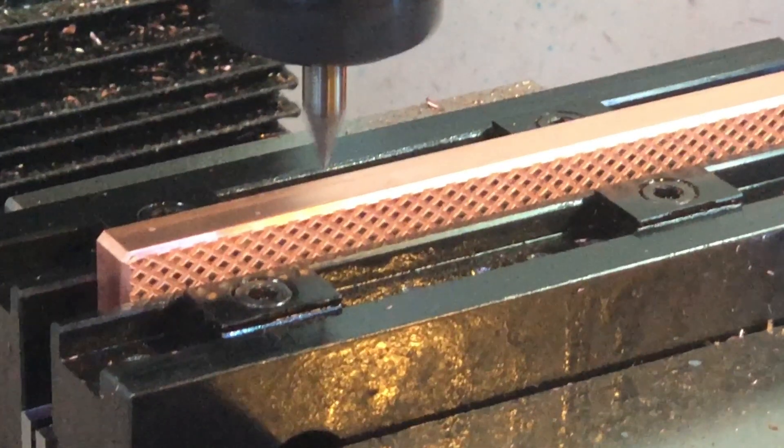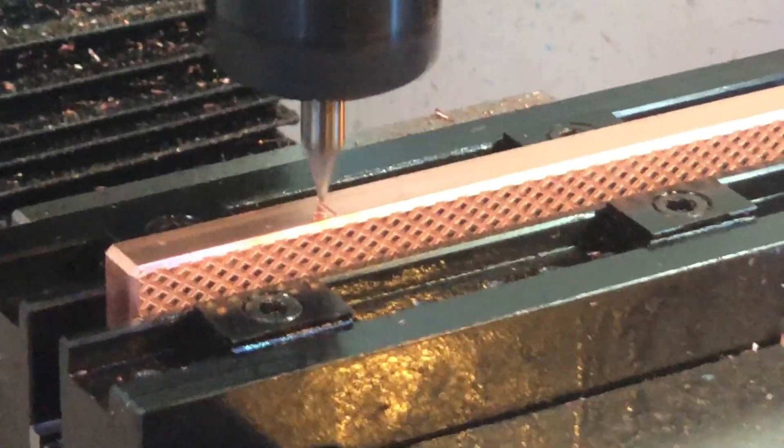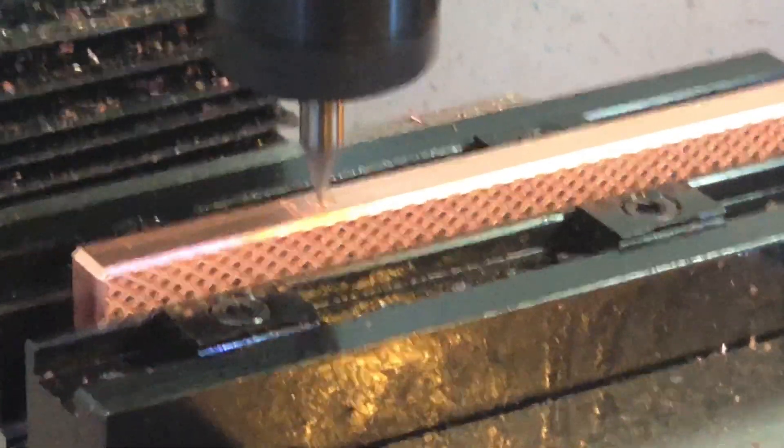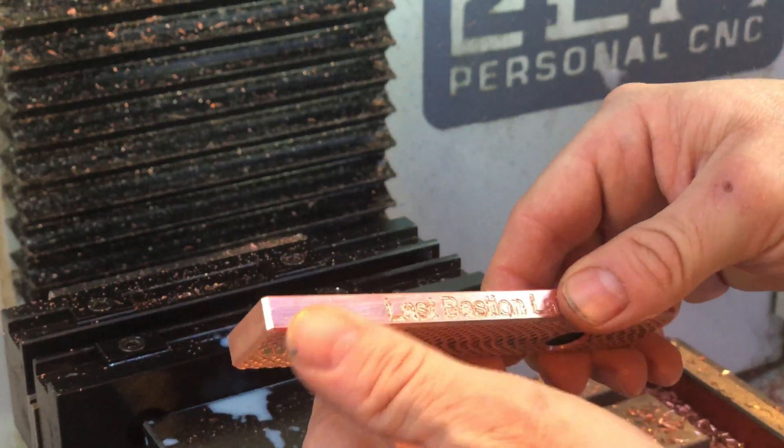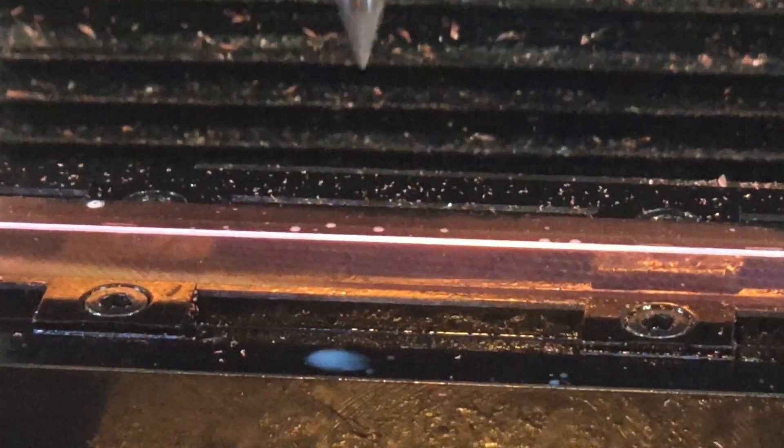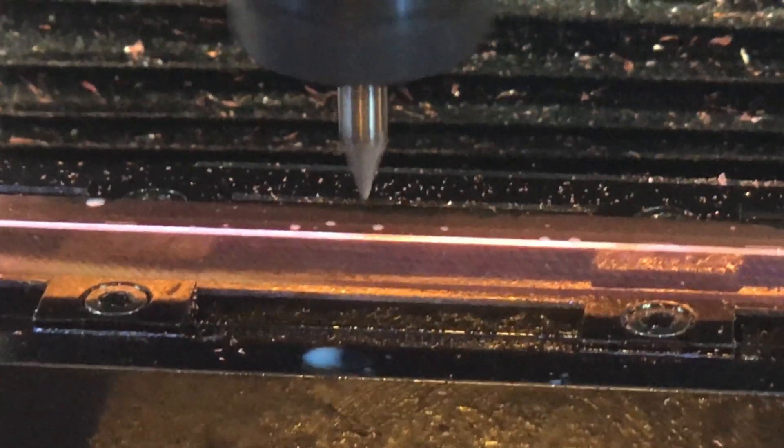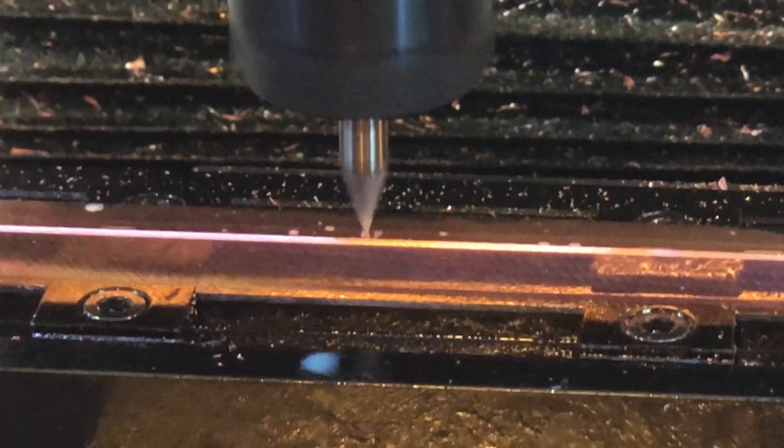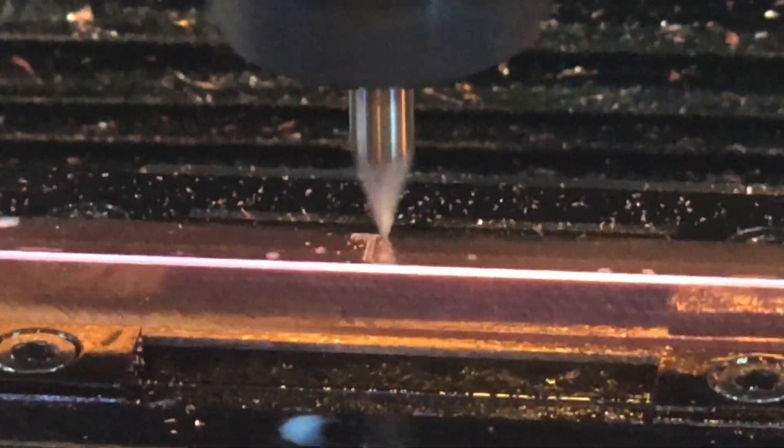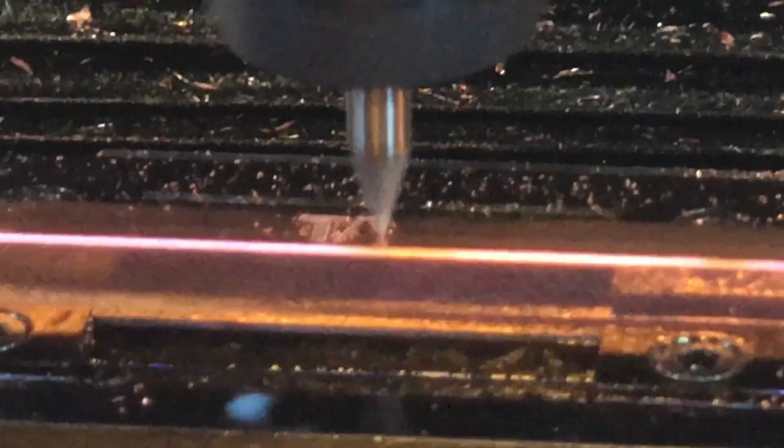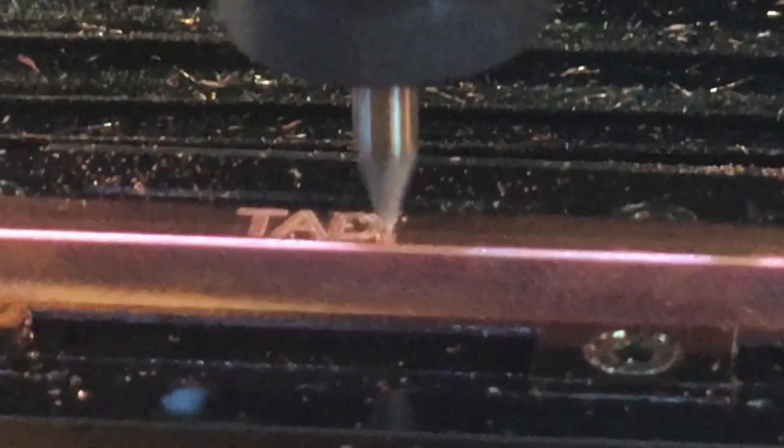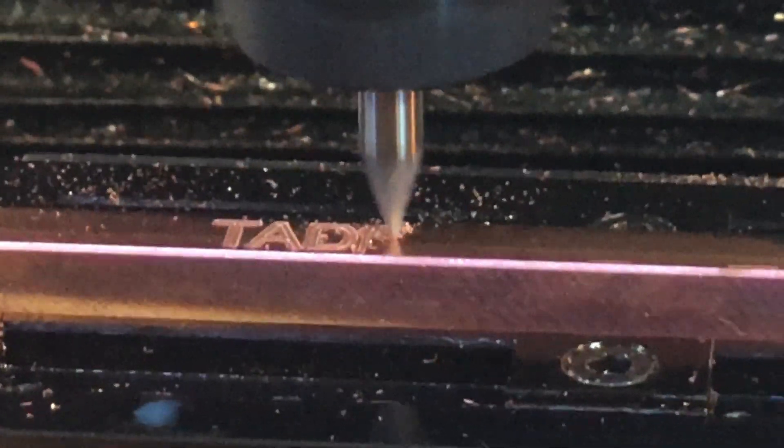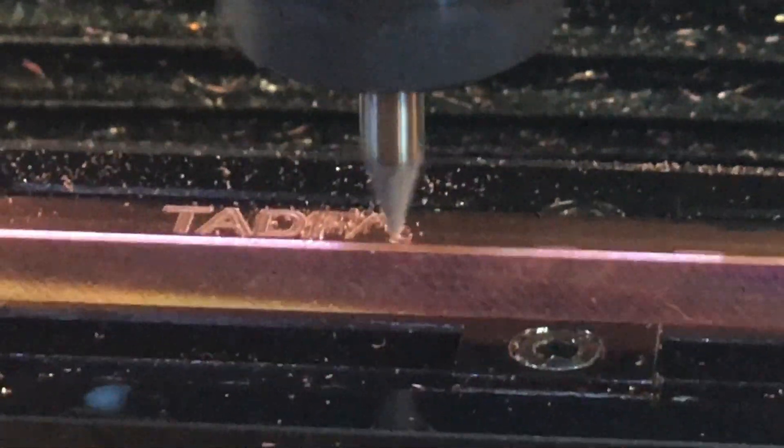Now time for a little engraving. I'm running a Lakeshore Carbide 60 degree engraving tool at 5 thou depth of cut. And now for the other jaw. This time I'm at 2 thou depth of cut and you can see it's a much, much nicer cut. 10,000 RPM.